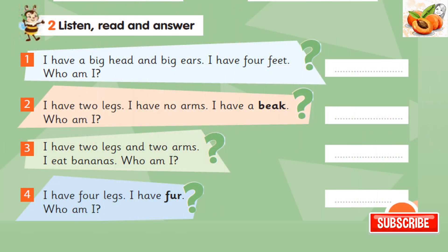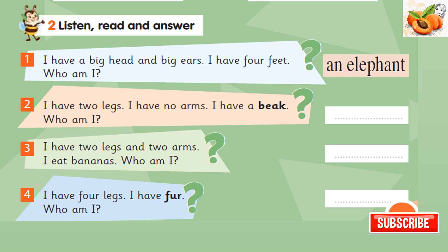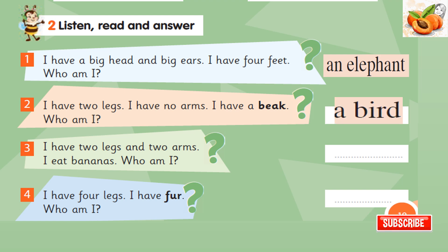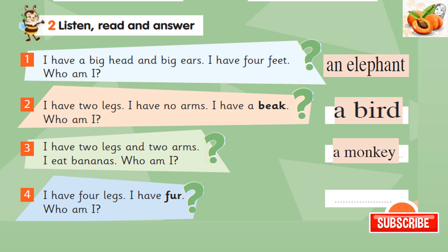Listen, read, and answer. 1. I have a big head and big ears. I have four feet. Who am I? 2. I have two legs. I have no arms. I have a beak. Who am I? 3. I have two legs and two arms. I eat bananas. Who am I? 4. I have four legs. I have fur. Who am I?